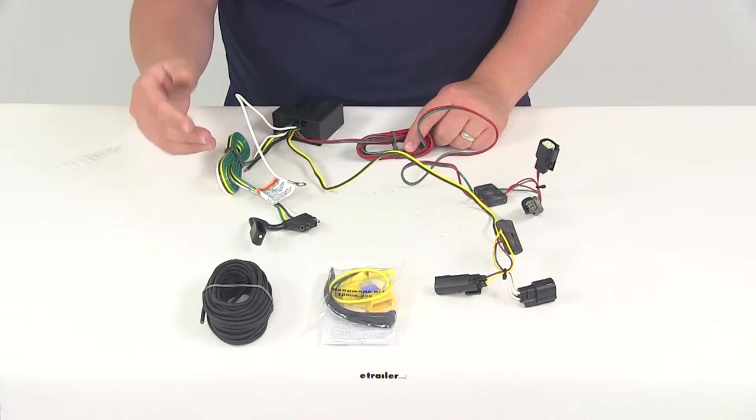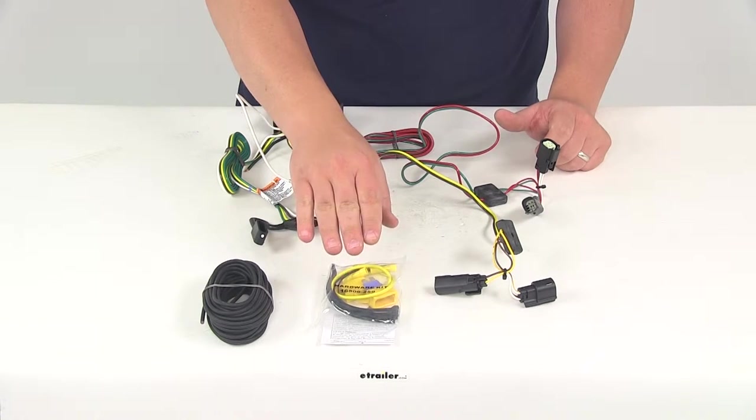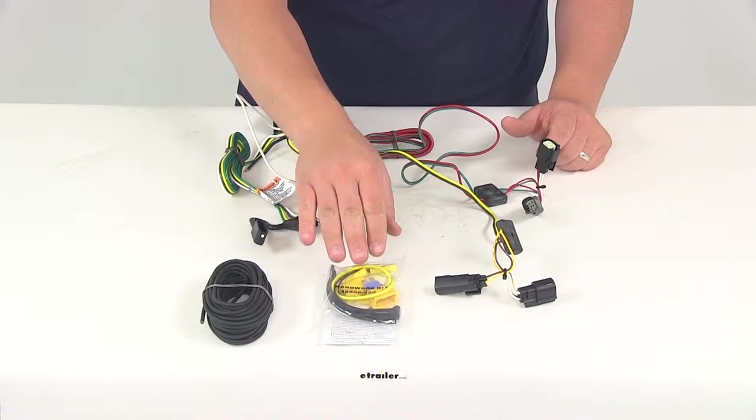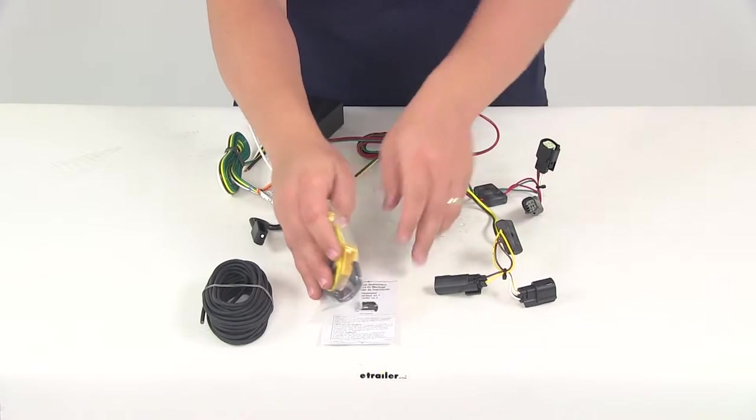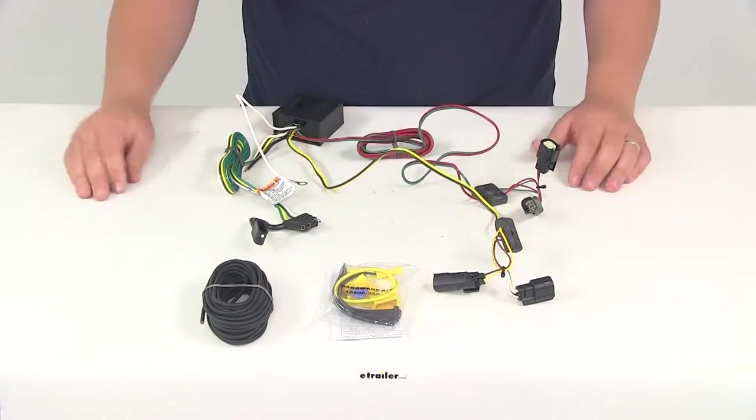It's going to give you the amount of wiring that you need to make all your connections. It's going to give you all the buck connectors, the fuse holders, the ring terminals, the screws, zip ties. It's going to come with detailed instructions so everything you need for a complete installation is included with this kit.